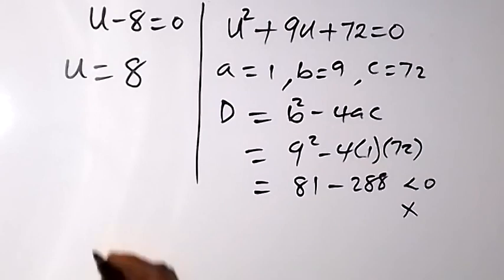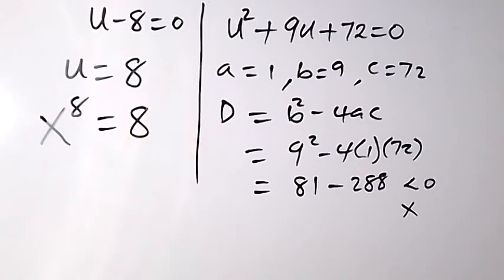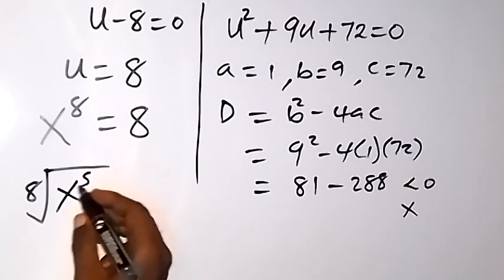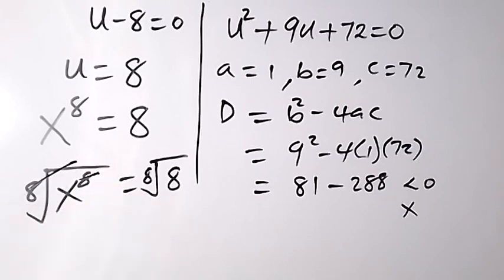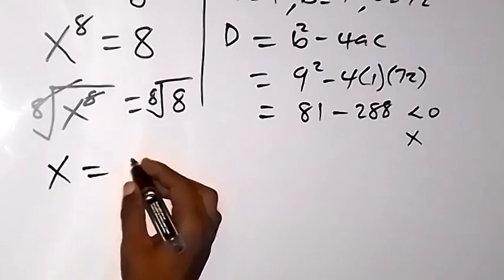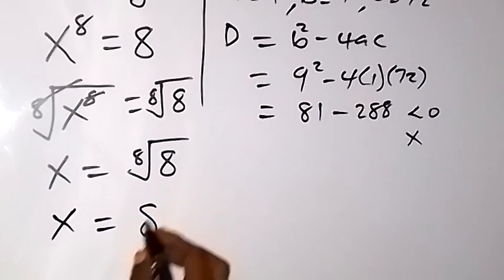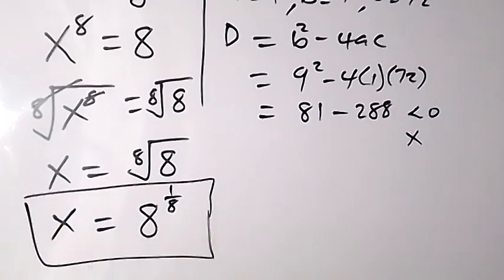Working with u equals 8, and recalling that u represents x raised to power 8, we have x raised to power 8 equals 8. Taking the 8th root on both sides, the 8th root cancels the power of 8, leaving x equals the 8th root of 8, which we can also write as x equals 8 raised to power 1 over 8. This is the value of x, and we have come to the end of the solution. Thank you for watching — don't forget to subscribe for more videos. See you in the next class, bye for now.